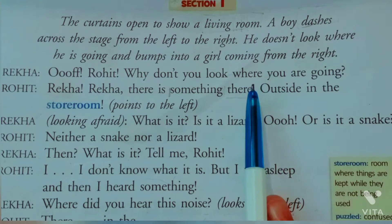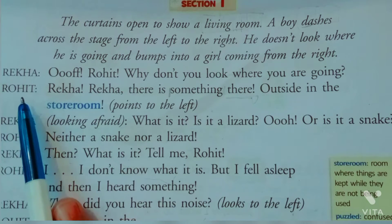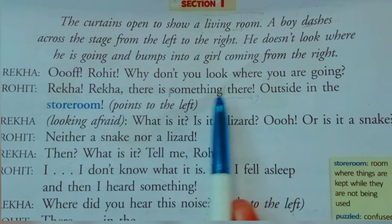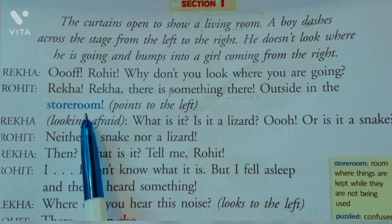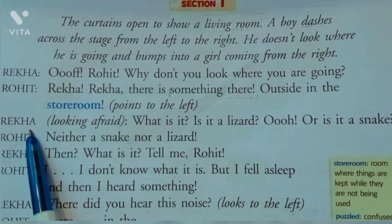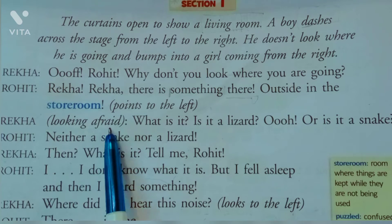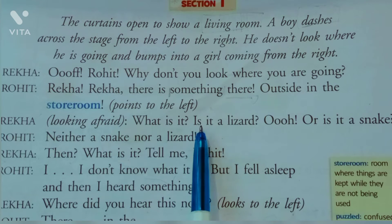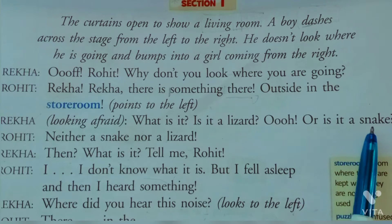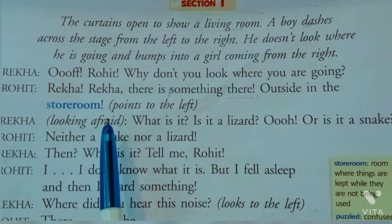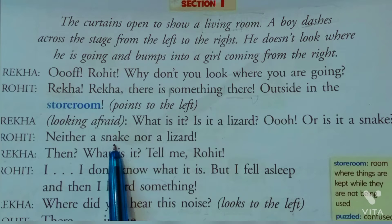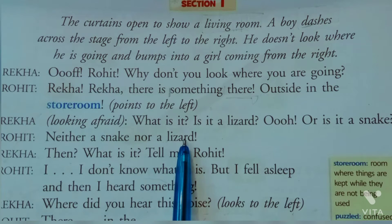Rohit ke reply mein kya bolta hai — 'Rekha, there is something there, outside in the storeroom' — wahan par kuch hai, left ki taraf ishaara karta hai. Rekha darr jaati hai aur poochti hai 'What is it? Is it a lizard? Is it a snake?' Rohit bolta hai 'Neither a snake nor a lizard' — na to saap hai wahan par, na hi chhipkali.